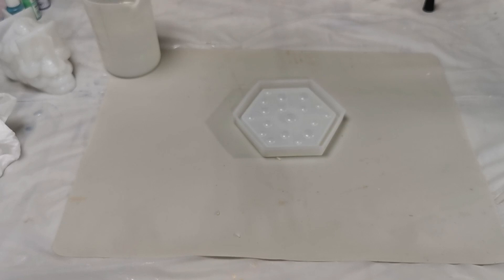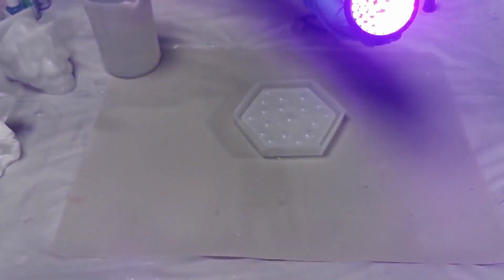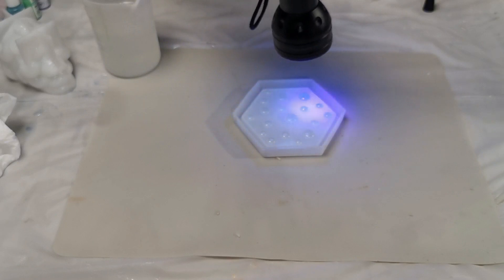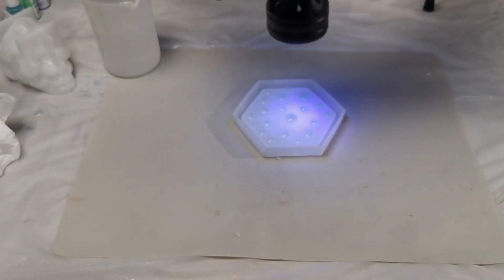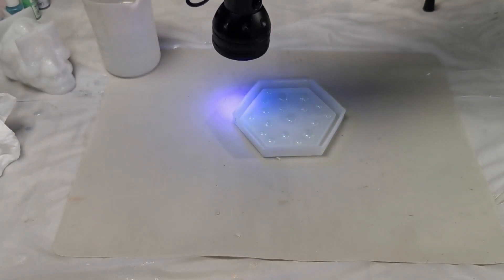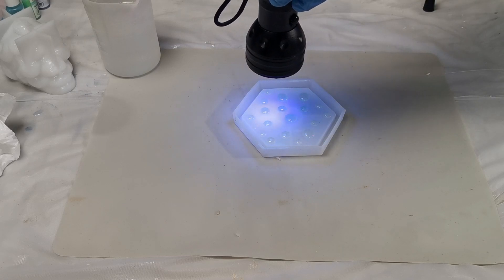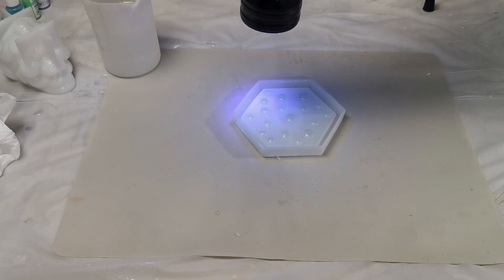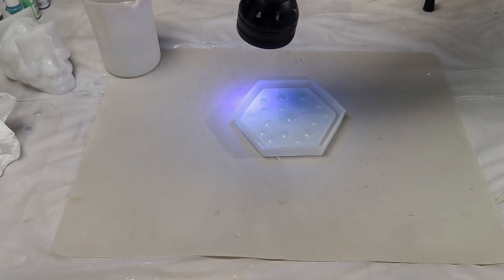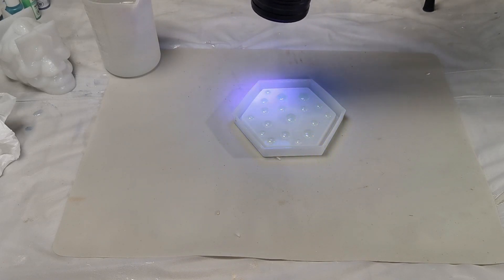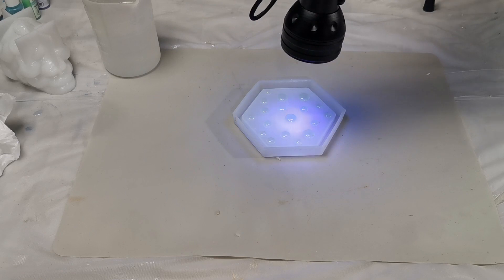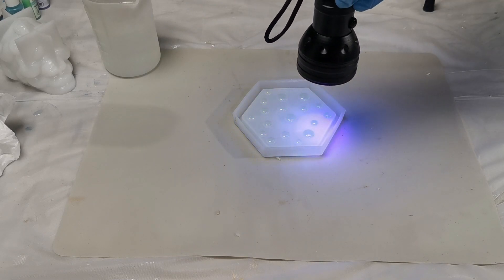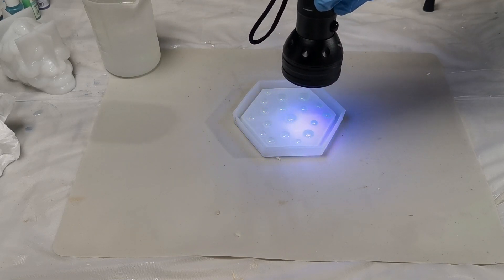The next step is where the magic happens. Ready for it? UV light. Whatever you do, do not take this UV light into the bathroom—you just can't unsee that. So this is the reason it's called UV resin: it cures under UV light. Here we're using artificial UV light, but you can also just put this on a windowsill so that natural UV light can cure it as well. It just takes a little bit longer.